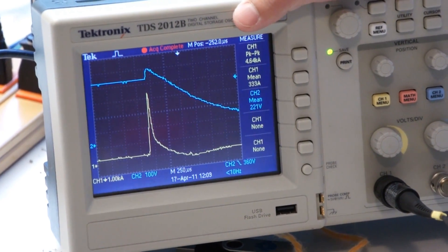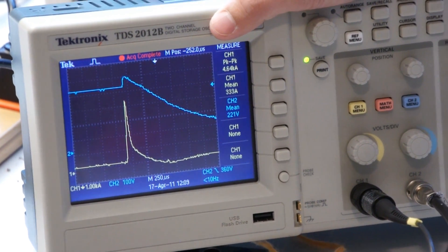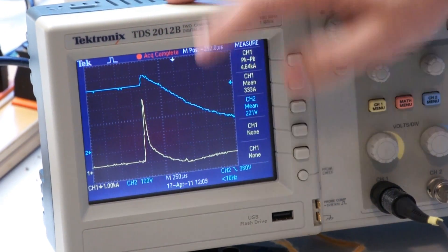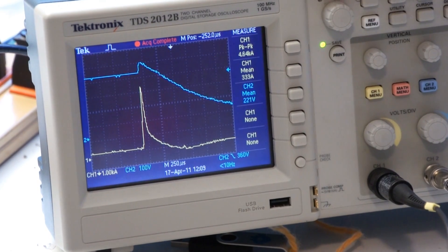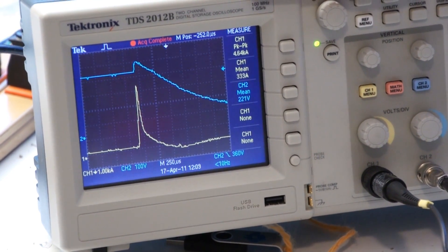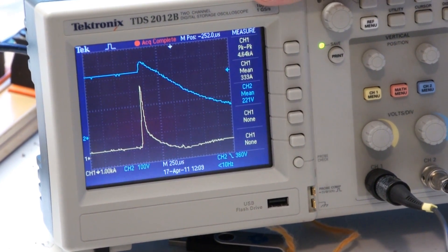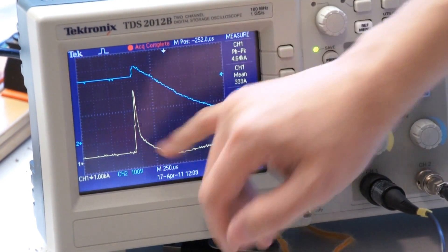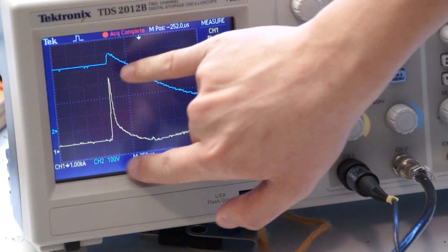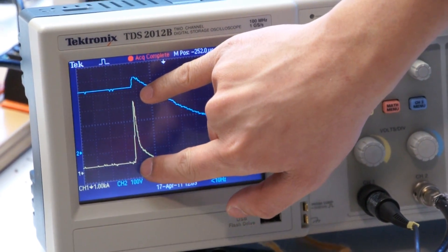Here you can see the waveforms captured from the test shot I just fired. The blue trace is the voltage, and the yellow trace is the current. Because the oscilloscope can't go up to the range that I have my instrumentation set up for, this is actually twice the value, so this is about 9 kilo amps peak to peak.